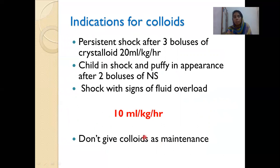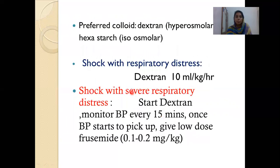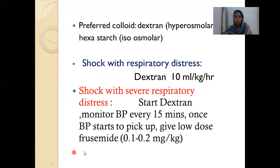Indications for colloids: refractory shock after three boluses of 20 mL per kg without improvement; two boluses given but child is still in shock with a puffy appearance; and shock with signs of fluid overload. Preferred colloid is Dextran, as it is hyperosmolar. For shock with respiratory distress, give Dextran at 10 mL per kg per hour. Once BP starts picking up after Dextran, give low-dose furosemide 0.1 to 0.2 mg per kg. Monitor urine output at 1 mL per kg per hour.